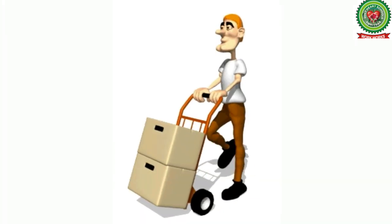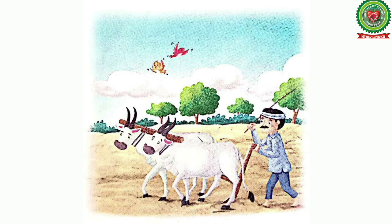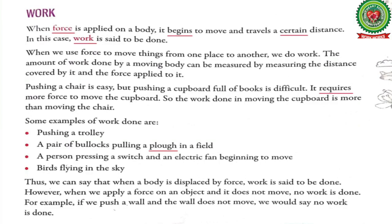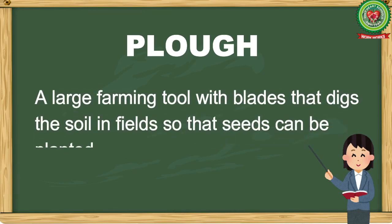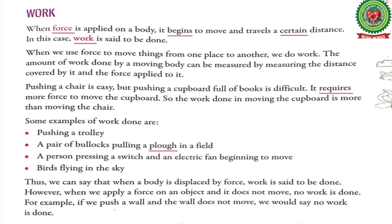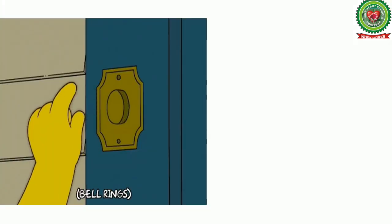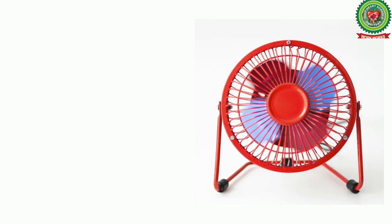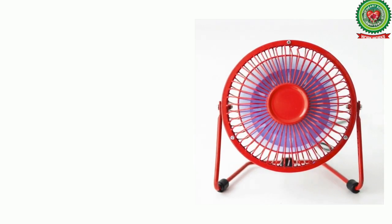Some examples of work done are: pushing a trolley, a pair of bullocks pulling a plow in a field. Underline the word 'plow' — its meaning is a large farming tool with blades that digs the soil in fields so that seeds can be planted. Another example is a person pressing a switch and an electric fan beginning to move.